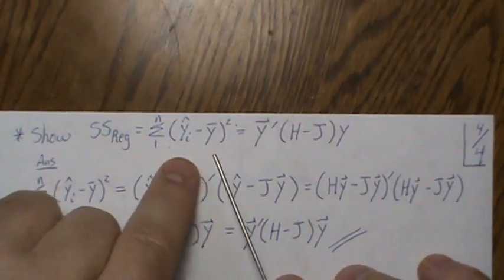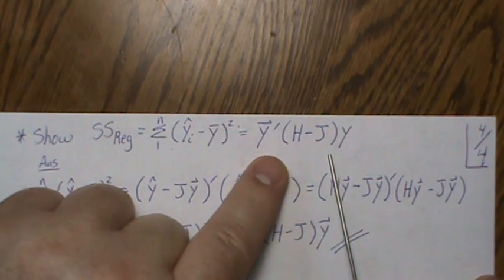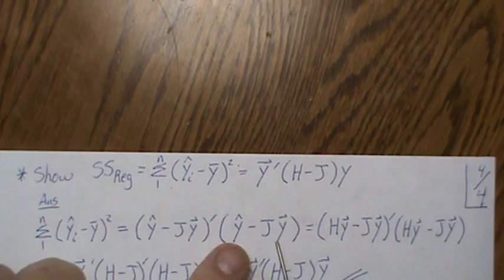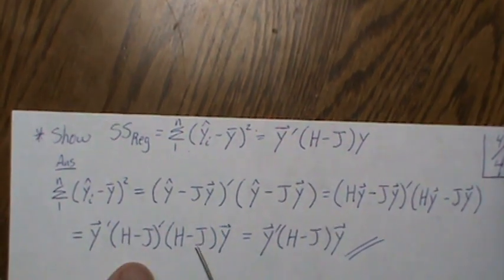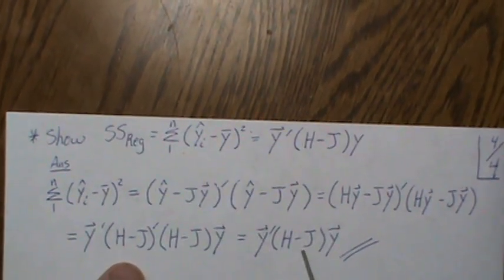The sum of squares regression can be written as y'(H−J)y. Starting from Σ(ŷᵢ − y-bar)², in matrix form this is (ŷ − Jy)'(ŷ − Jy). Rewriting ŷ as Hy, we factor out y to get y'(H−J)'(H−J)y. We showed that product equals H−J, so SS Regression = y'(H−J)y.